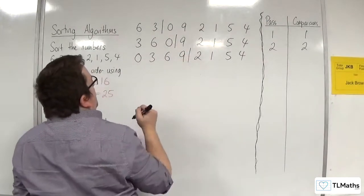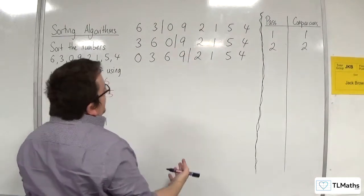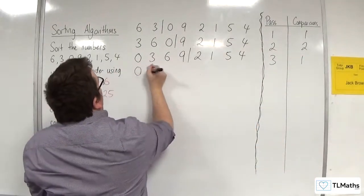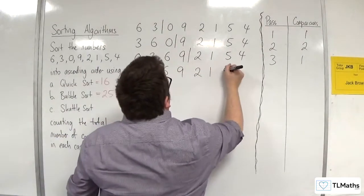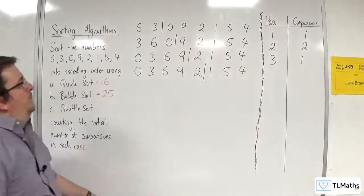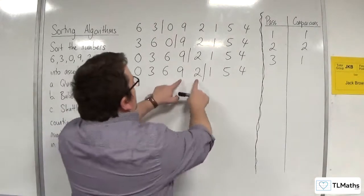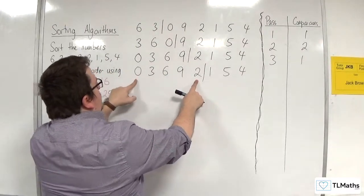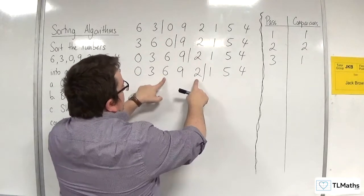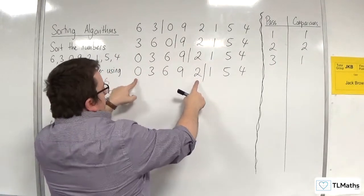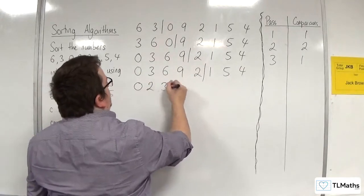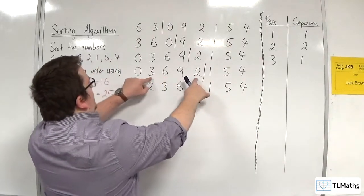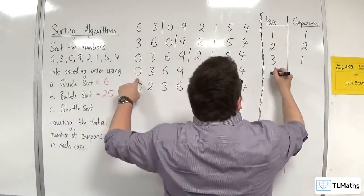Then we bring in 9. 6 and 9 are already in the correct order, so on the third pass we just make 1 comparison: 0, 3, 6, 9, 2, 1, 5, 4. Now we bring in 2. 2 gets compared with 9, then 6, then 3, then 0 — swapping each time until it finds its place — giving 0, 2, 3, 6, 9, 1, 5, 4. So we made 4 comparisons on the fourth pass.